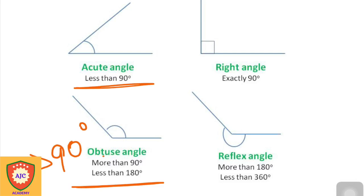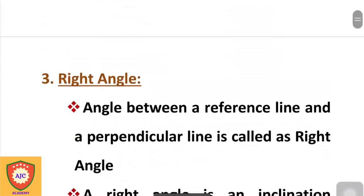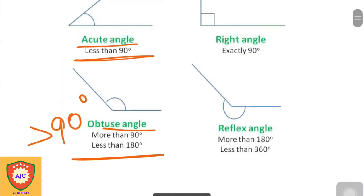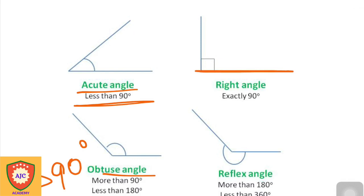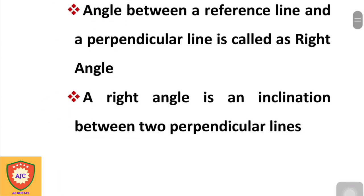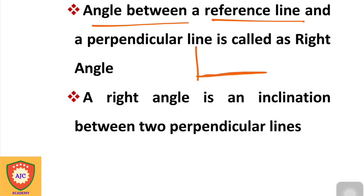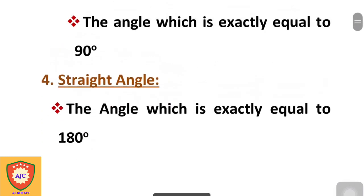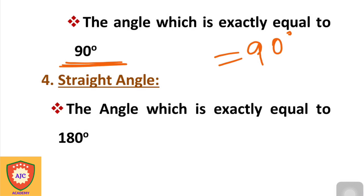The right angle is exactly 90 degrees. It is formed between the reference line and a perpendicular line. The right angle is equal to 90 degrees. The next type is the straight angle, which is equal to 180 degrees.